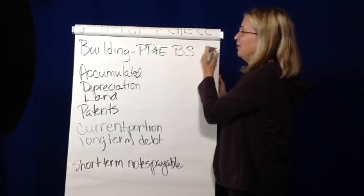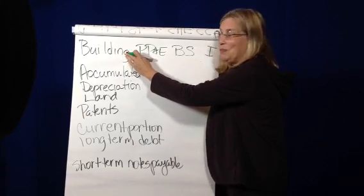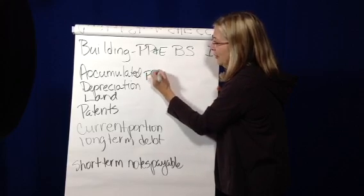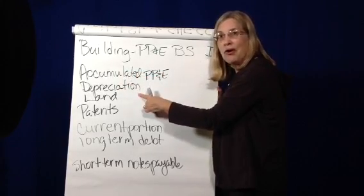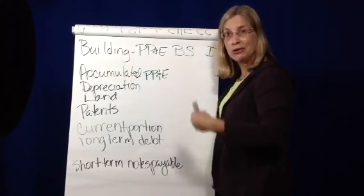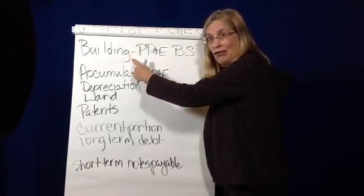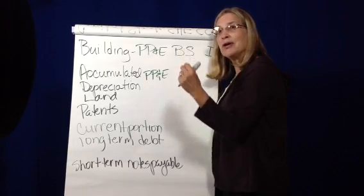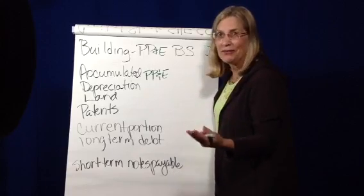Accumulated depreciation is the shadow account of building, and it also is property, plant, and equipment. And what it shows is the accumulation or usage over time of that building. In other words, how much of that building have you used to date? So if you take the building, the cost of the building, minus its accumulated depreciation, you get a number and it's called its book value, or how much life is left in the building.